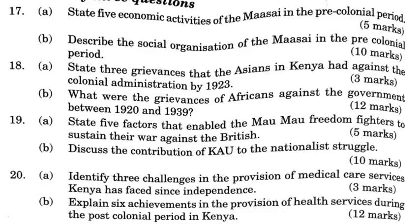Question 18b: What were the grievances of Africans against the government between 1920 and 1939? One, the Kipande system, which required all adult African males to carry identity cards. The system was racist because it was only Africans who were required to carry it. Africans were forced to oppose it because they felt it was a way of ensuring they continued to provide cheap labor on settler farms.